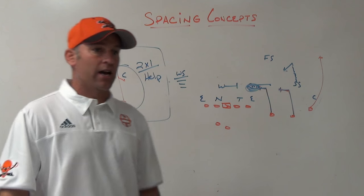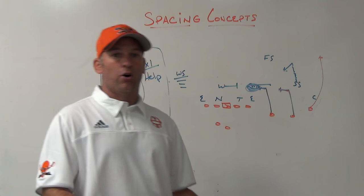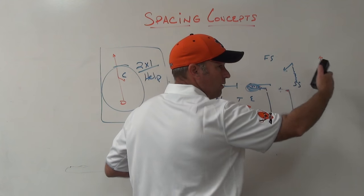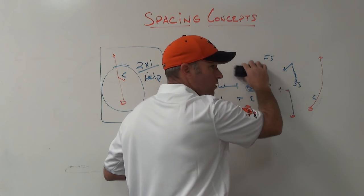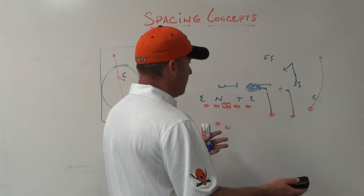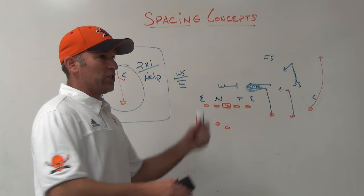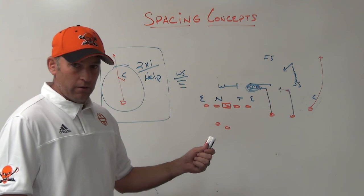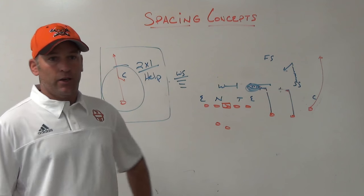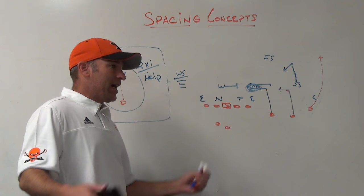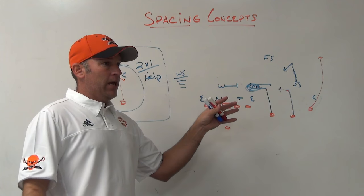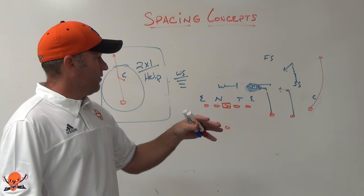That's where a lot of the great passing concepts originate. When guys like Sid Gilman came out and started throwing the ball, what they started realizing was there are way too many underneath horizontal spaces for these players to cover. So if we find ways to use that space accordingly, they can't cover all that space on the field. That's where a lot of air raid and West Coast stuff came from — guys started using spacing concepts where they were horizontally stretching the defense and putting routes in situations the defense could not handle.